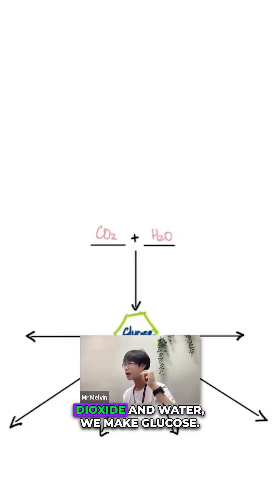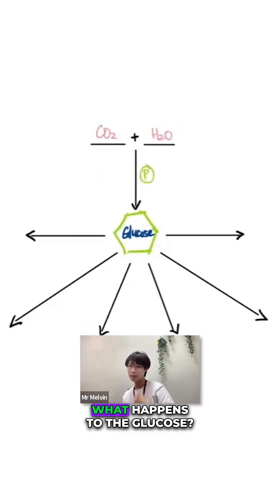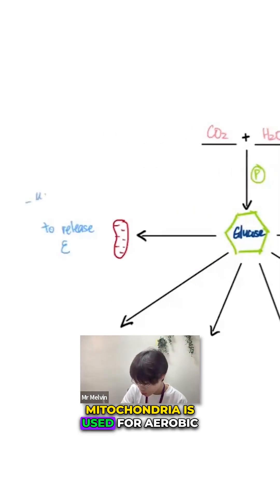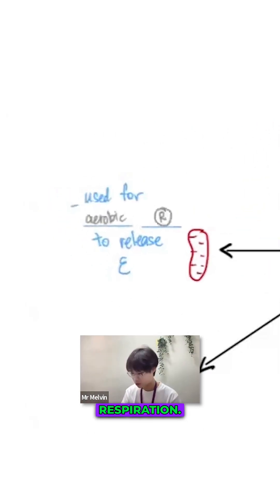To synthesize using carbon dioxide and water, we make glucose. What happens to the glucose? Mitochondria is used for aerobic respiration.